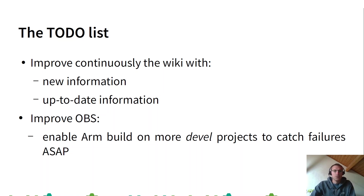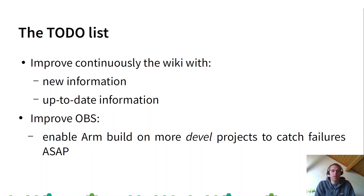We need to improve OBS — we need to enable ARM builds on more development projects to catch failures as soon as possible. Sometimes ARM is not enabled in the development project, the maintainer updates the package, submits to Factory, and then we have a build failure on ARM.